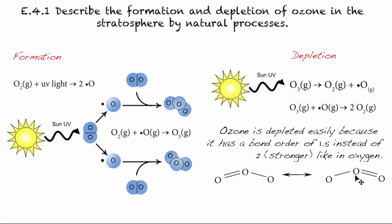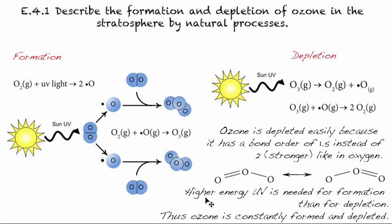So therefore, these bonds are slightly weaker. And it's actually quite, it takes less energy or UV with less energy to break these oxygens or these ozones or deplete these ozones. So to summarize that, we can say the higher energy UV is needed for the formation than for the depletion. And that's because of the bond orders. It's weaker bonds in the ozone. And thus, ozone is constantly formed and depleted.